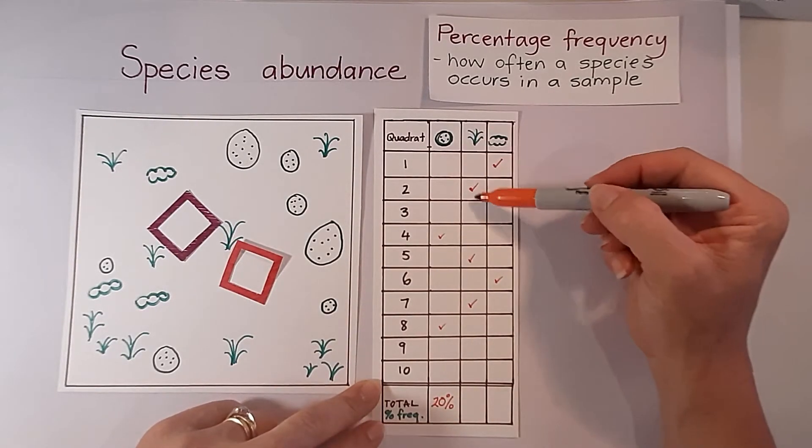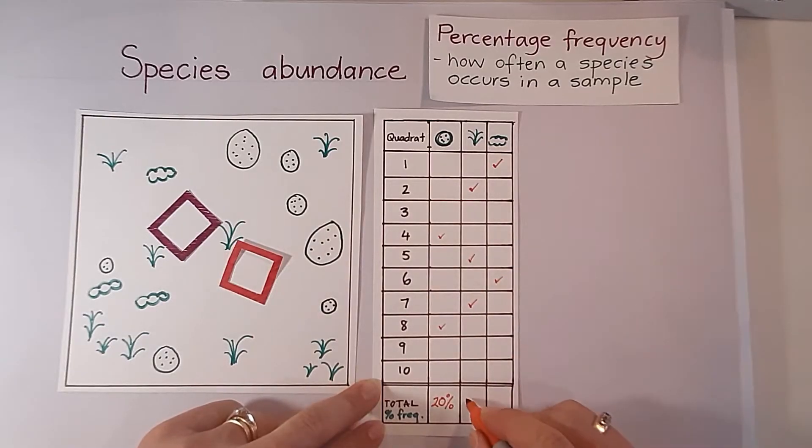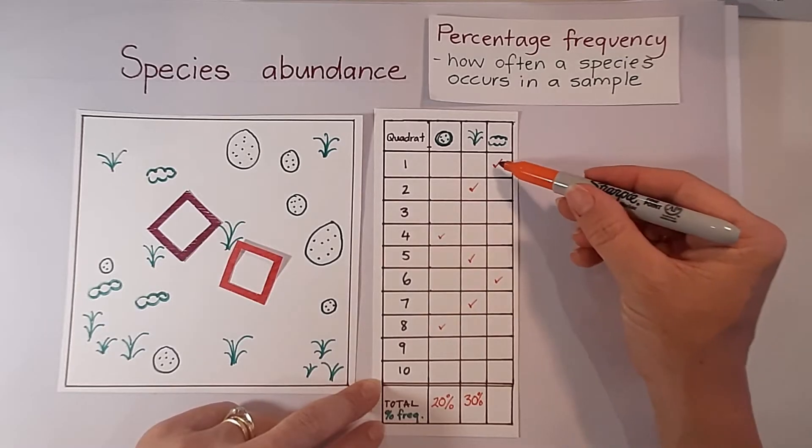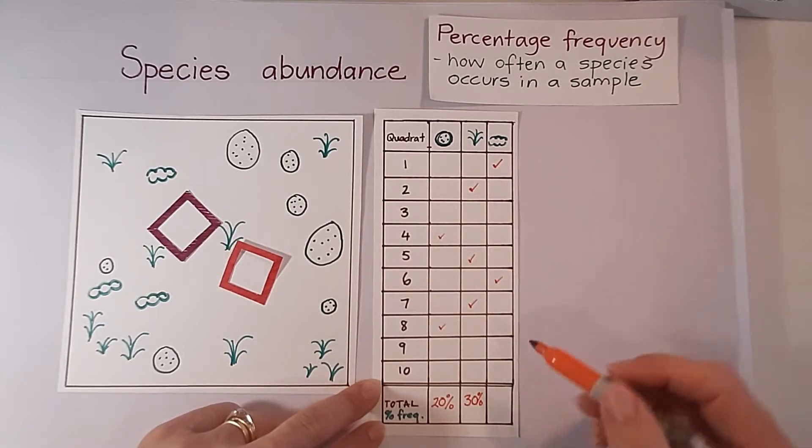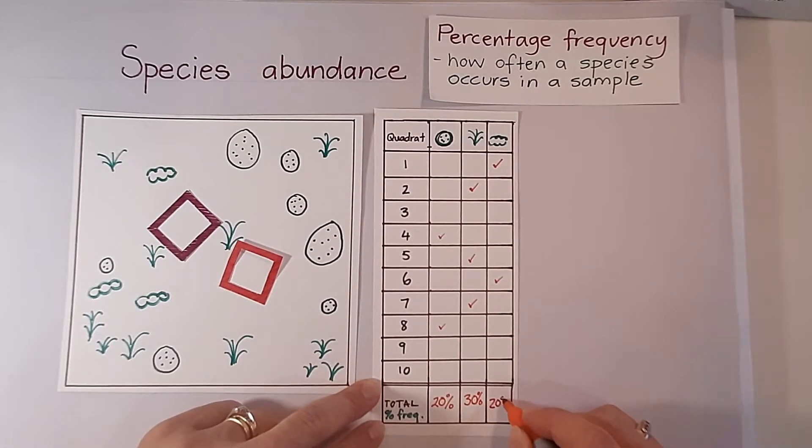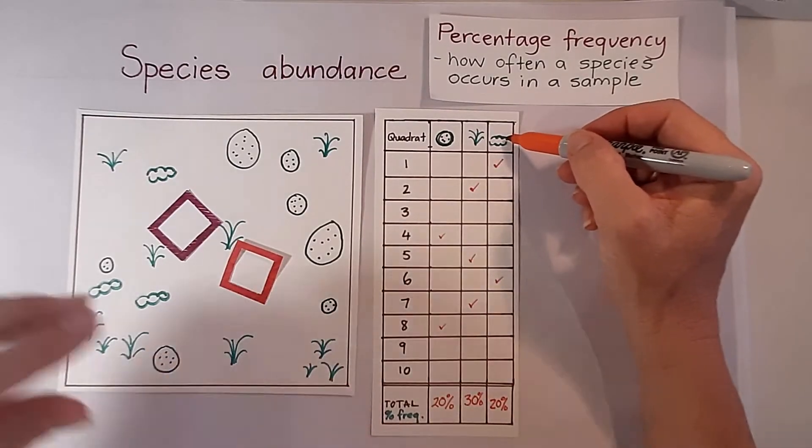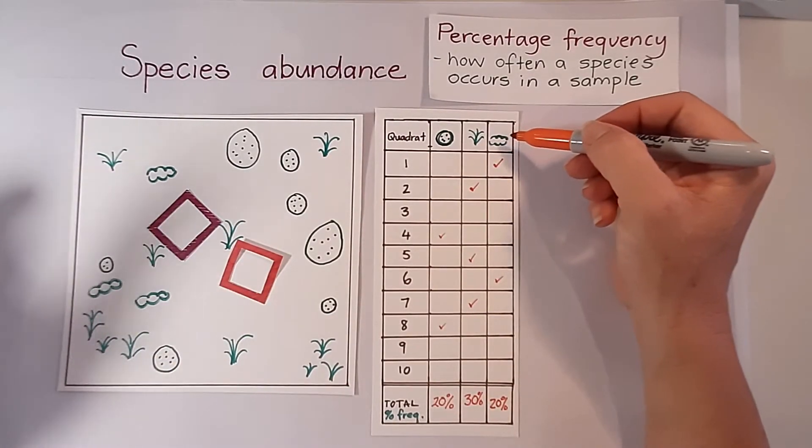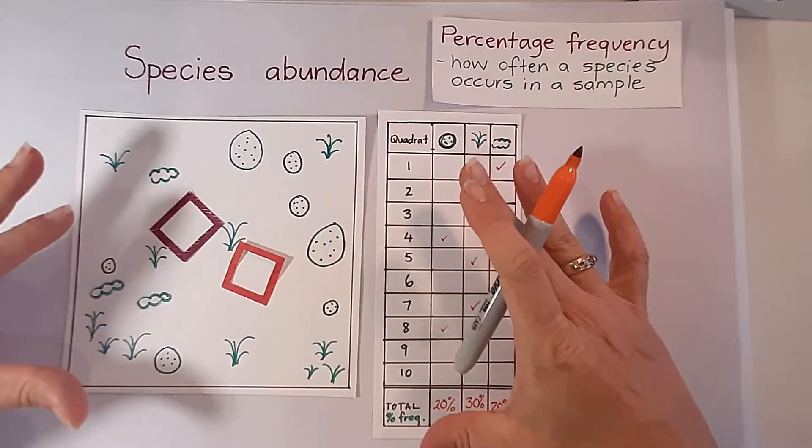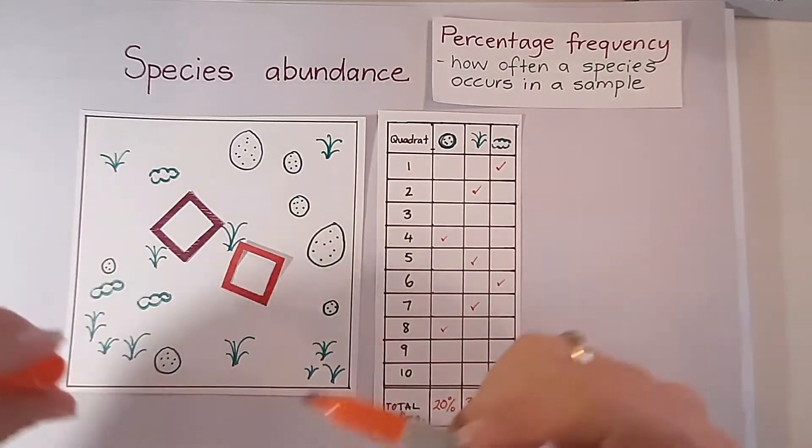For this one it was in three out of the 10 quadrats, so for that particular species it would be 30 percent frequency. And the final one we only found it in two quadrats. So again, we could say that this particular bushy species has 20 percent frequency. That's how we go about calculating percentage frequency.